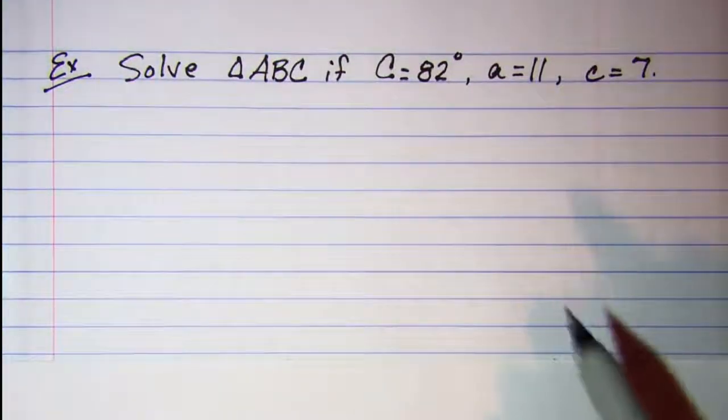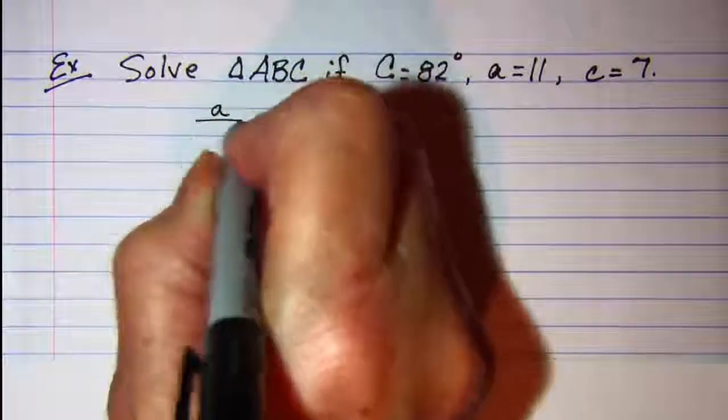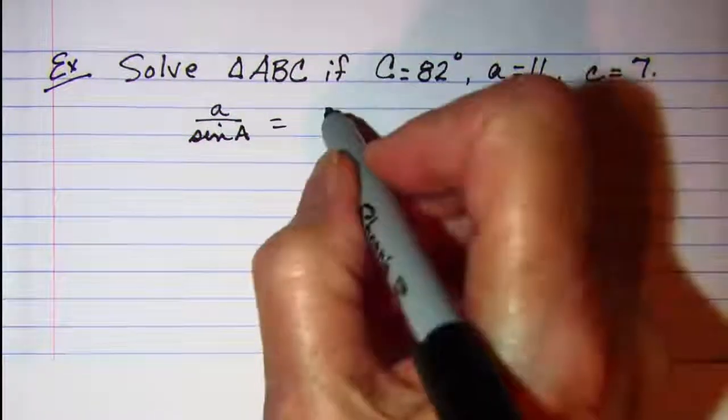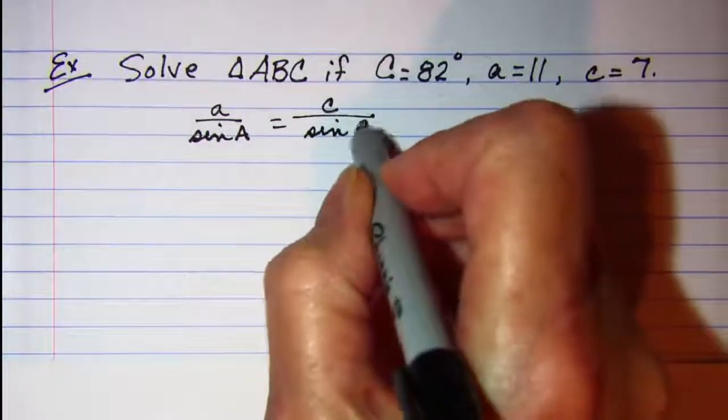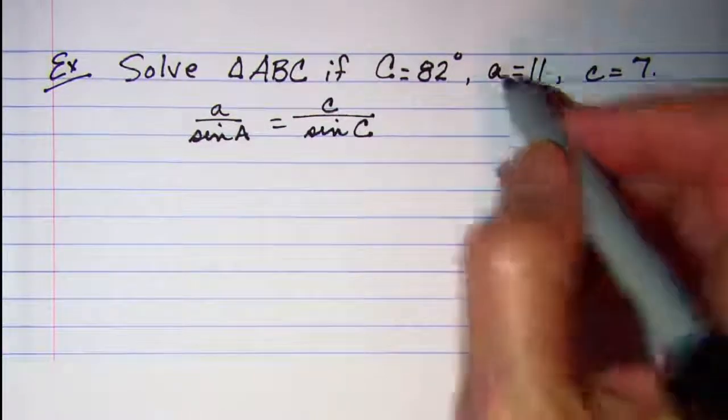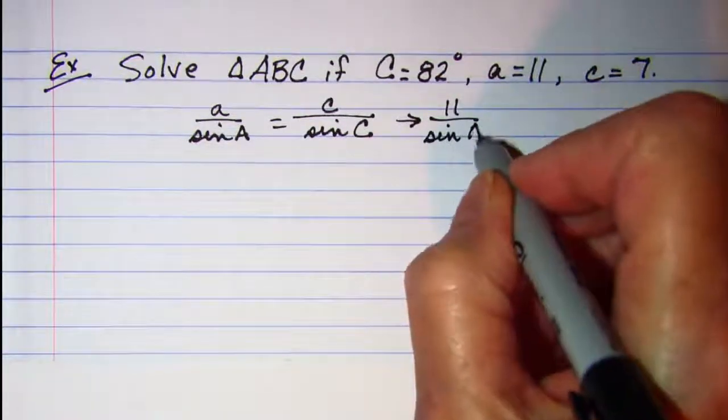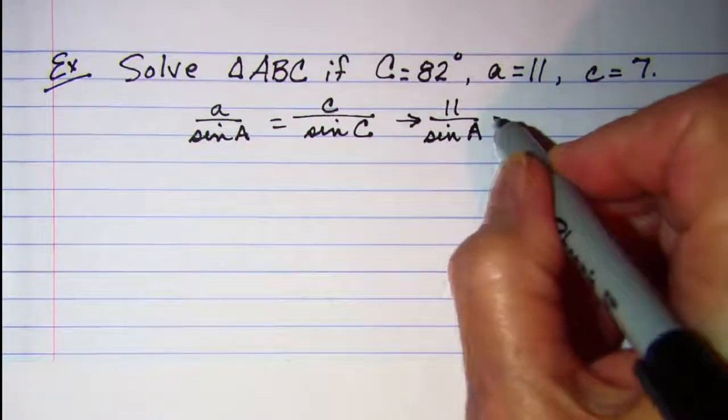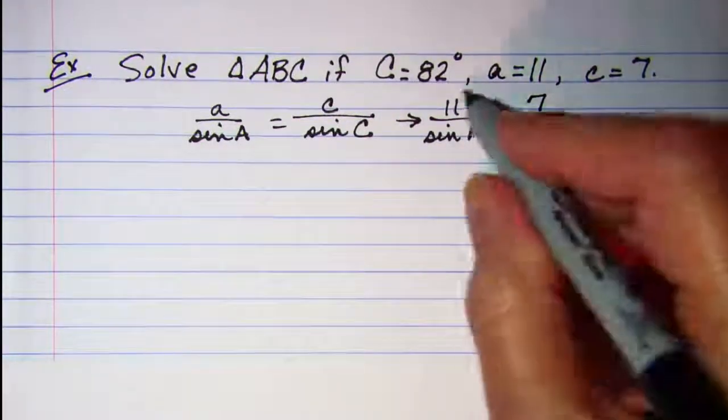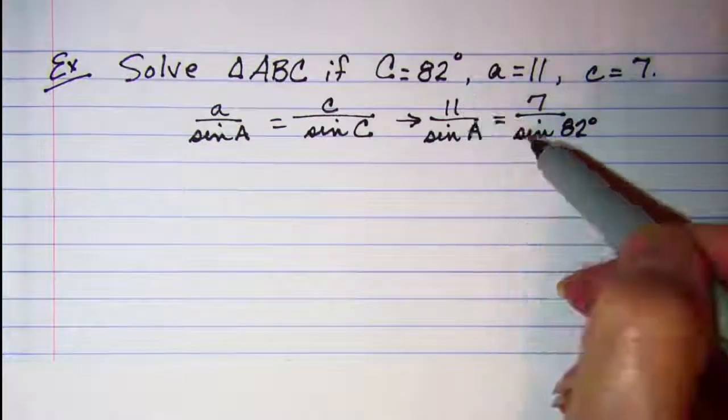So, let's set up our law of sines. We have A is to the sine of A as C is to the sine of C. So, if we put in our numbers, this is A is 11, is to the sine of angle A. I don't know that, so I'll just put the variable, and then C is 7, is to the sine of C, which is 82 degrees.